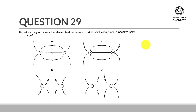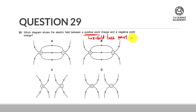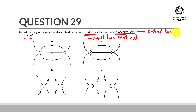So remember, for a positive point charge, the E-field lines must point out. Whereas for the negative point charge, the E-field lines must point in.